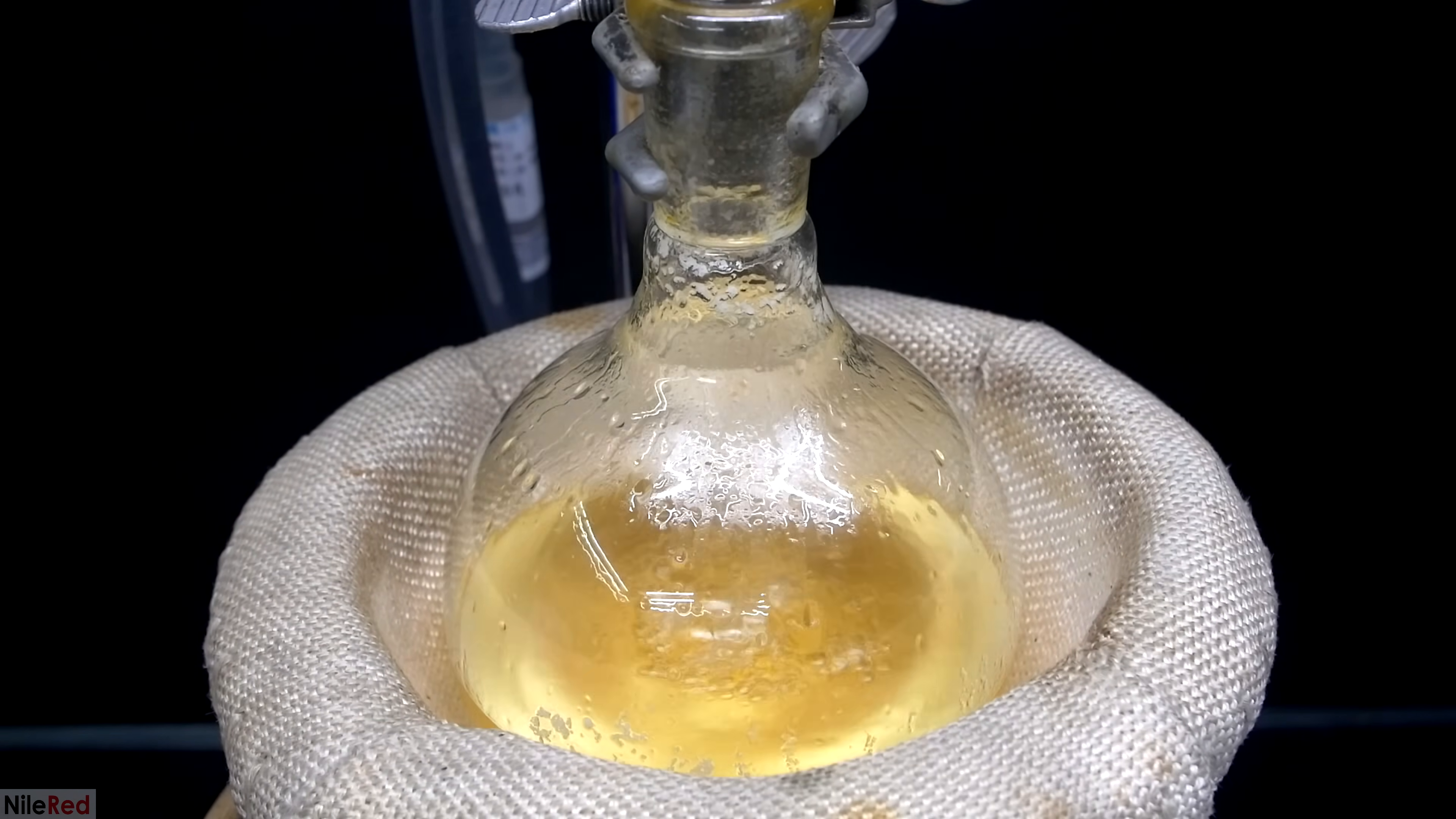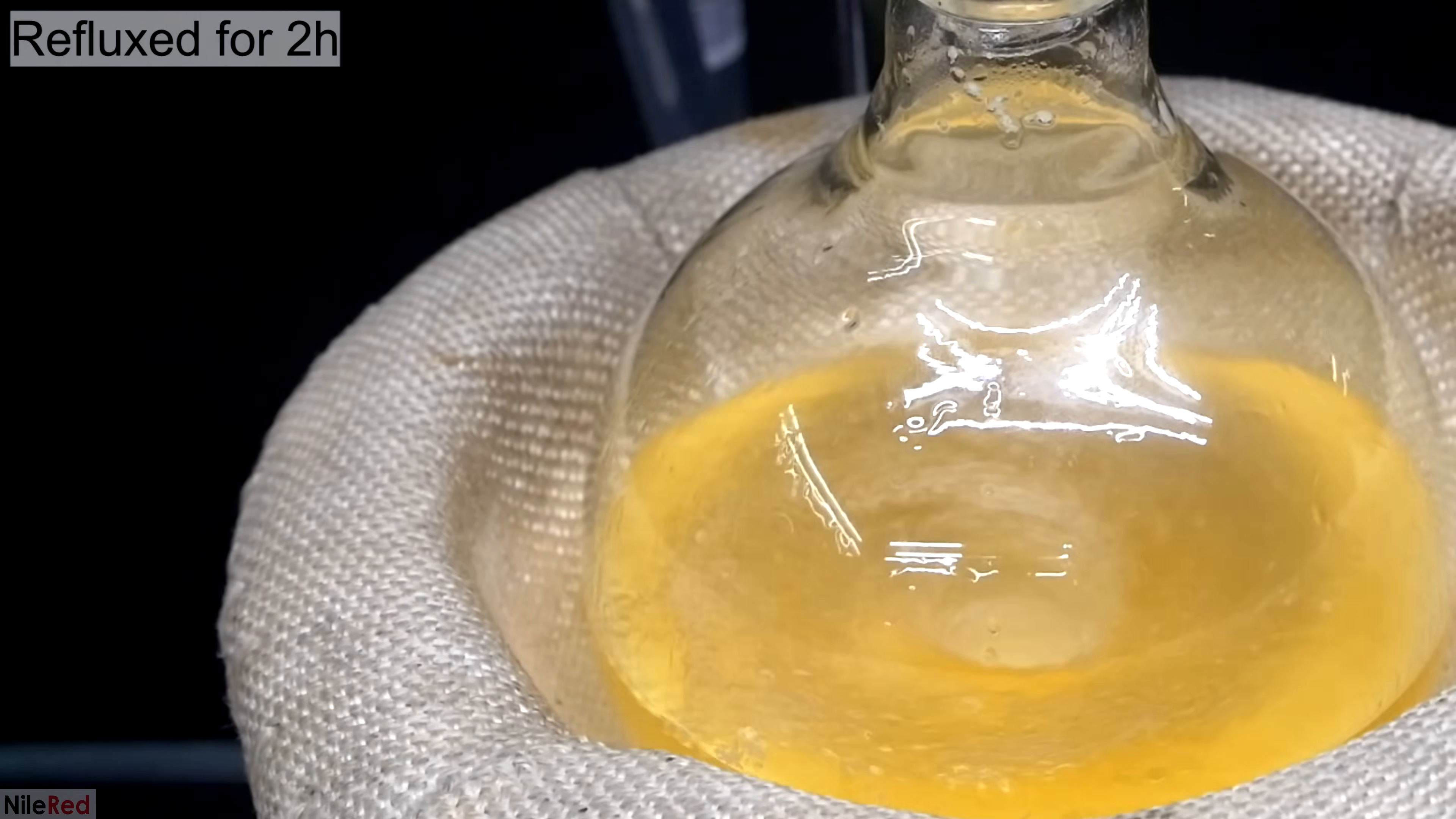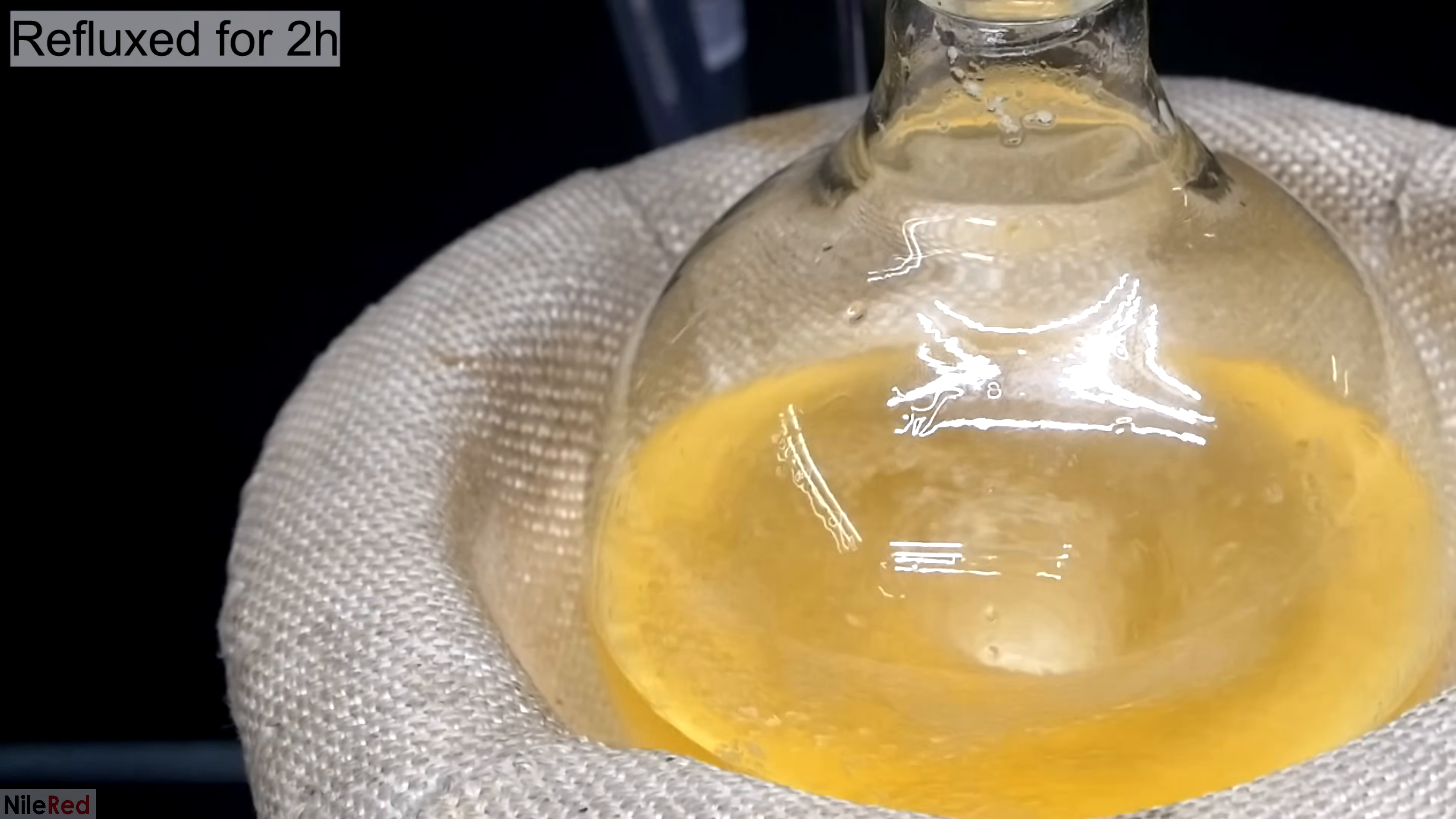Initially, the solution was opaque due to undissolved salts, but as it heats up, the salts dissolve into solution, and it becomes clear. Once the contents of the flask are boiling, and we have liquid recondensing, we start our timer, and we let the reflux go for about 2 hours.